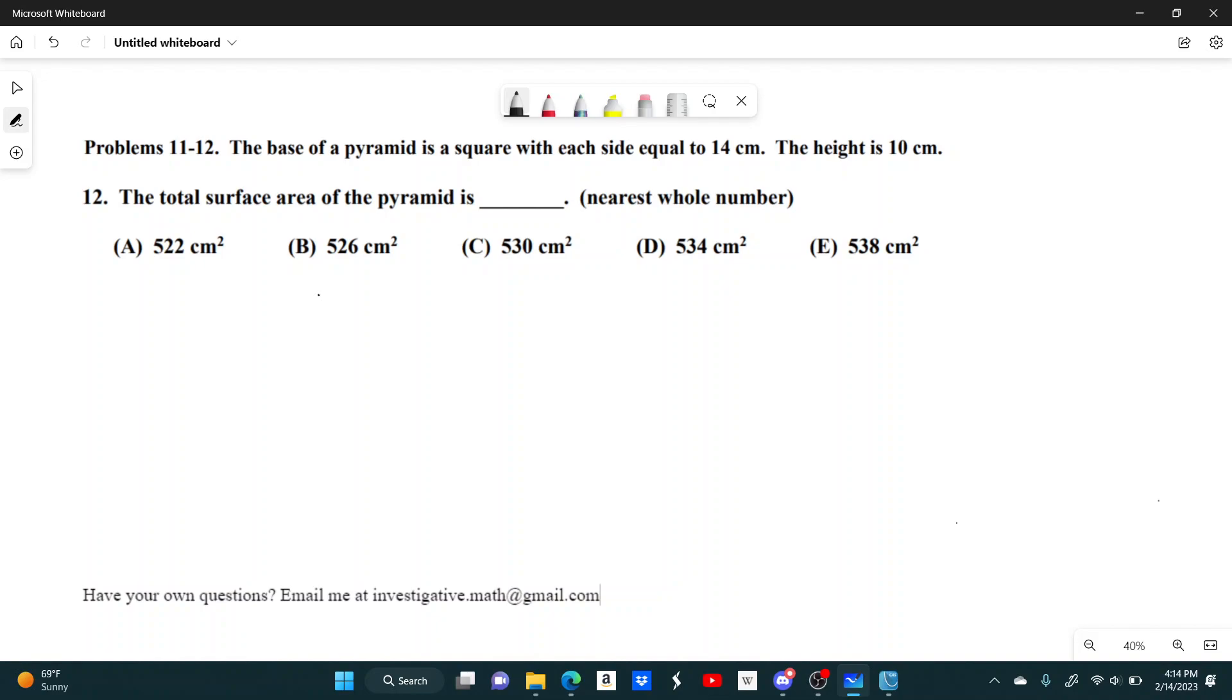Let's go ahead and find the square base first, just because that's the easiest part. The area of a square is just the side length squared, which will be 14 squared equals 196. See here, 14 centimeters.